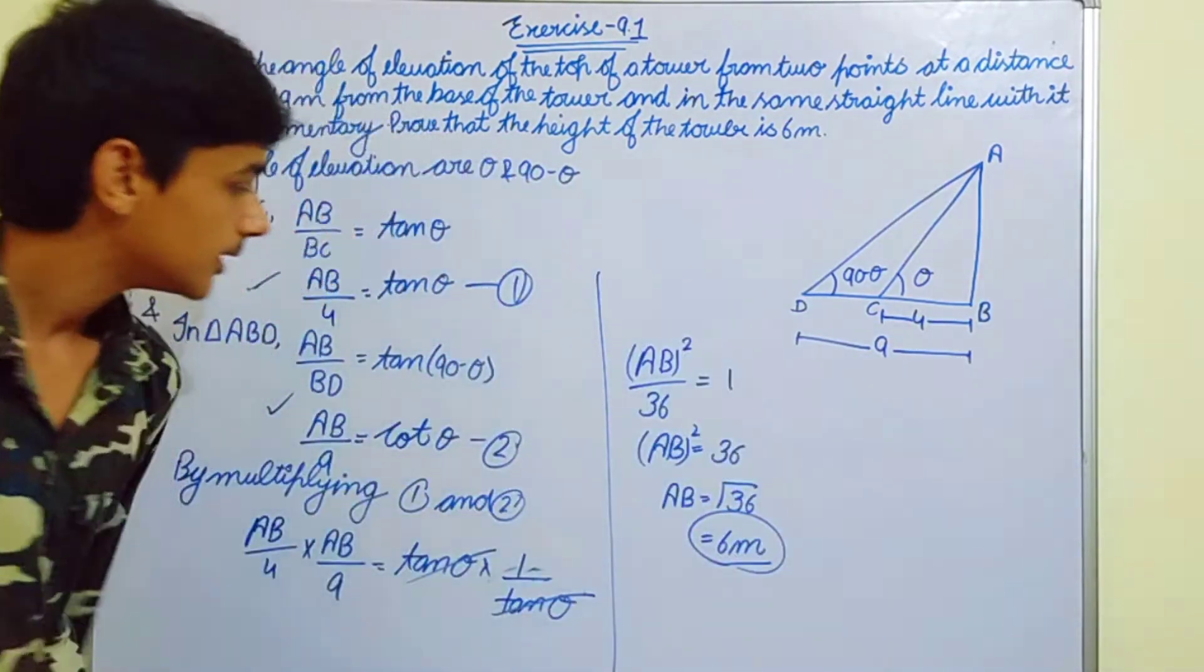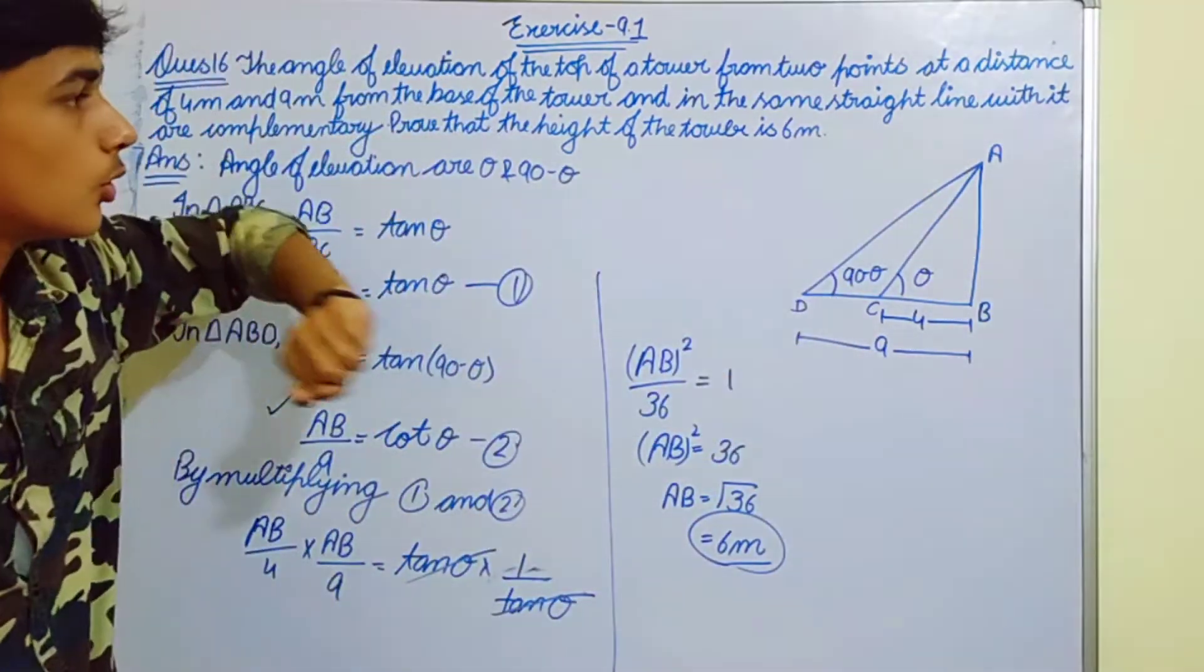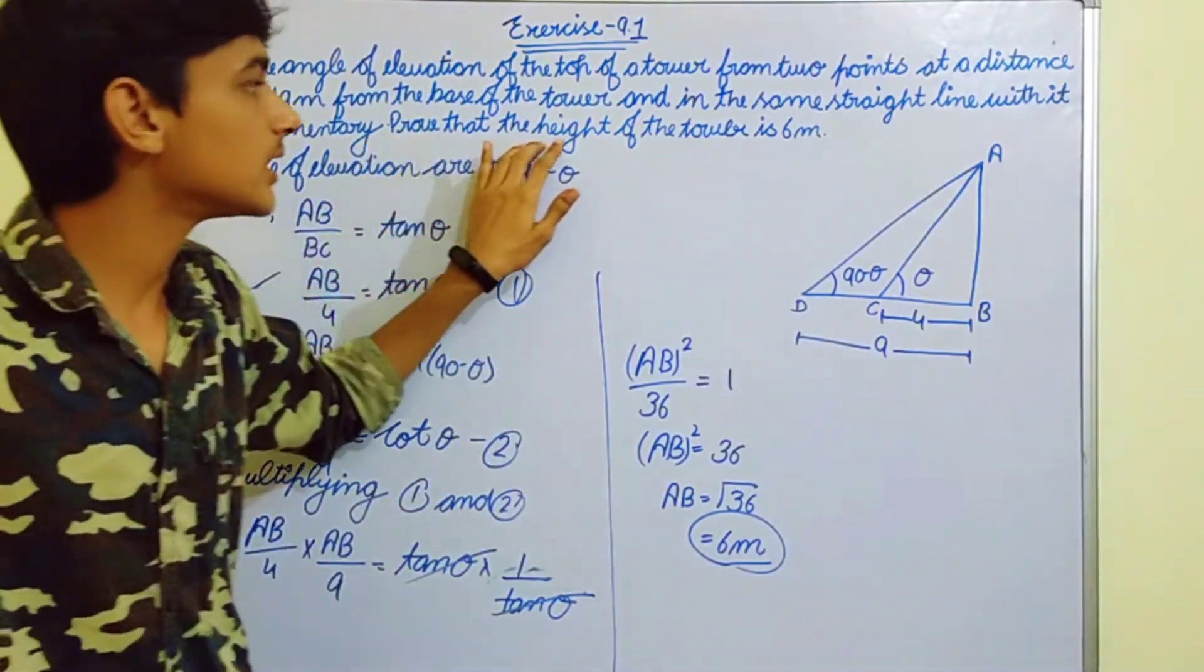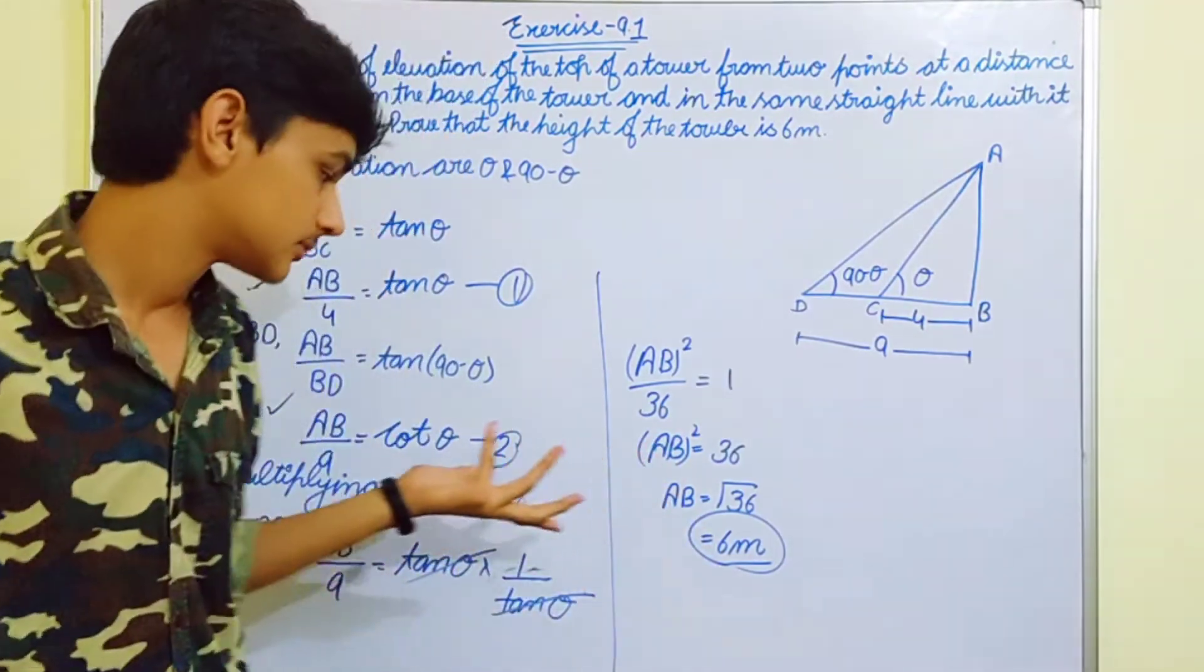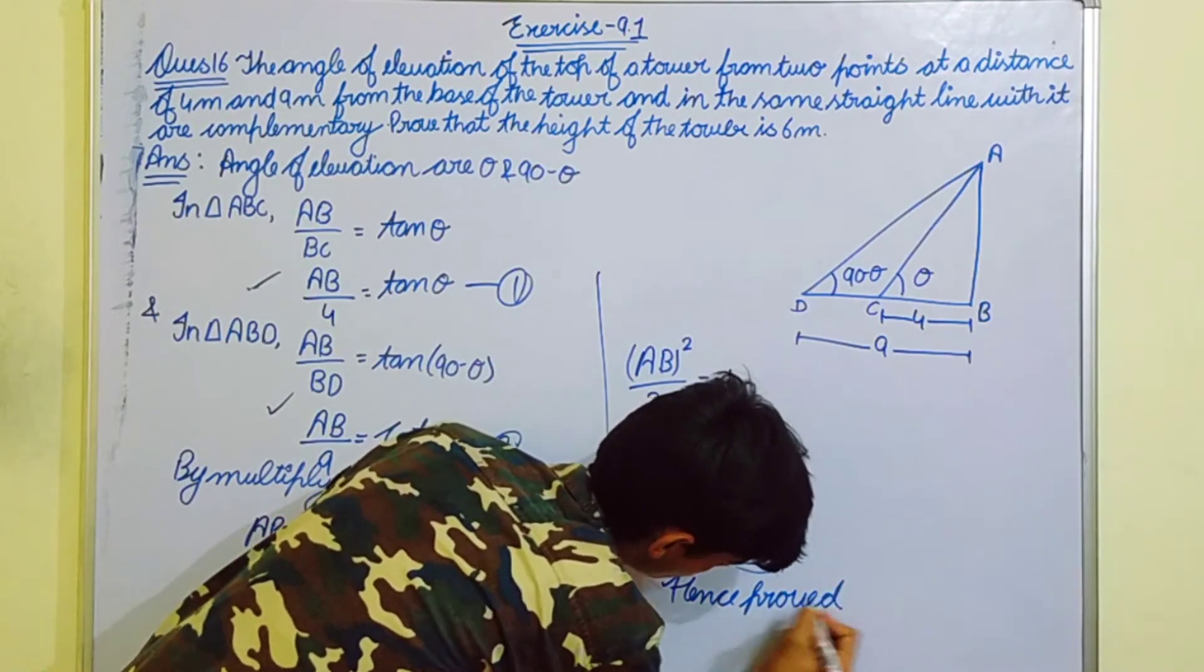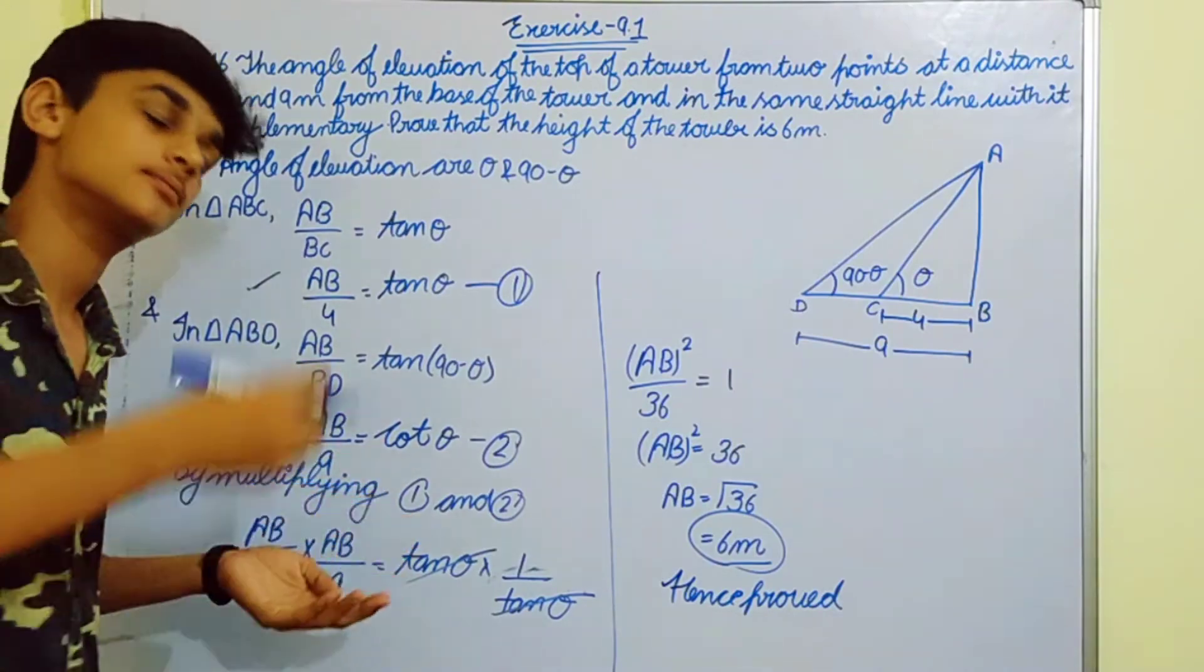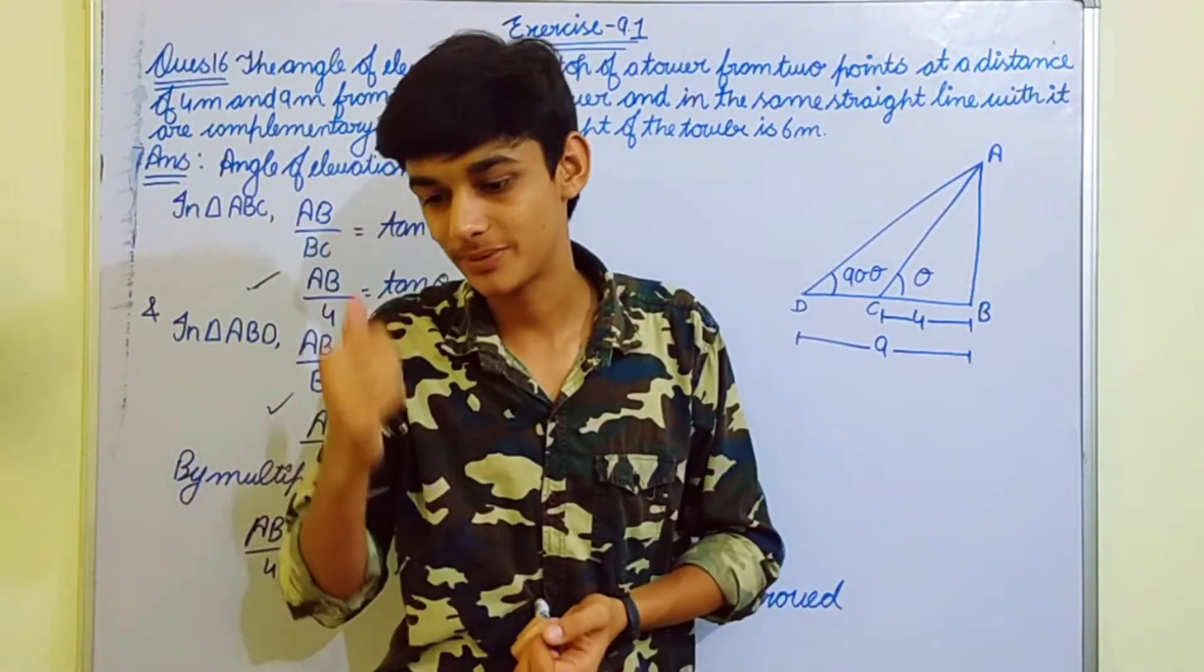AB ki value is 6 meter. AB is the height of the tower, and we had to prove height of the tower is 6 meter. It's the same, exactly. So hence proved. That's all for today guys. Pretty simple question, nothing is so hard in this.